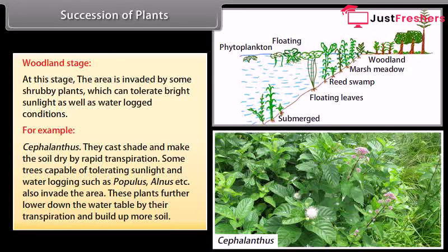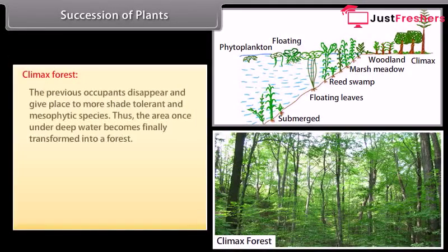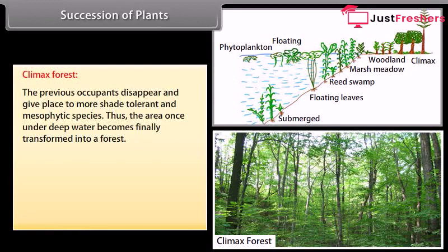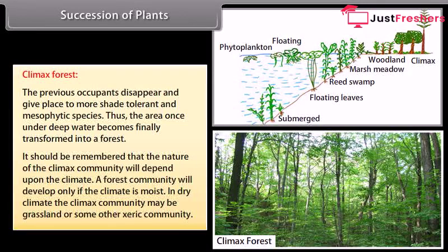Some trees capable of tolerating sunlight and waterlogging, such as Populus, Alnus, etc., also invade the area. These plants further lower the water table by their transpiration and build up more soil. Climax forest: the previous occupants disappear and give place to more shade-tolerant and mesophytic species. The area once under deep water becomes finally transformed into a forest. The nature of the climax community depends upon the climate — a forest will develop only if the climate is moist; in a dry climate the climax community may be grassland or some other xeric community.